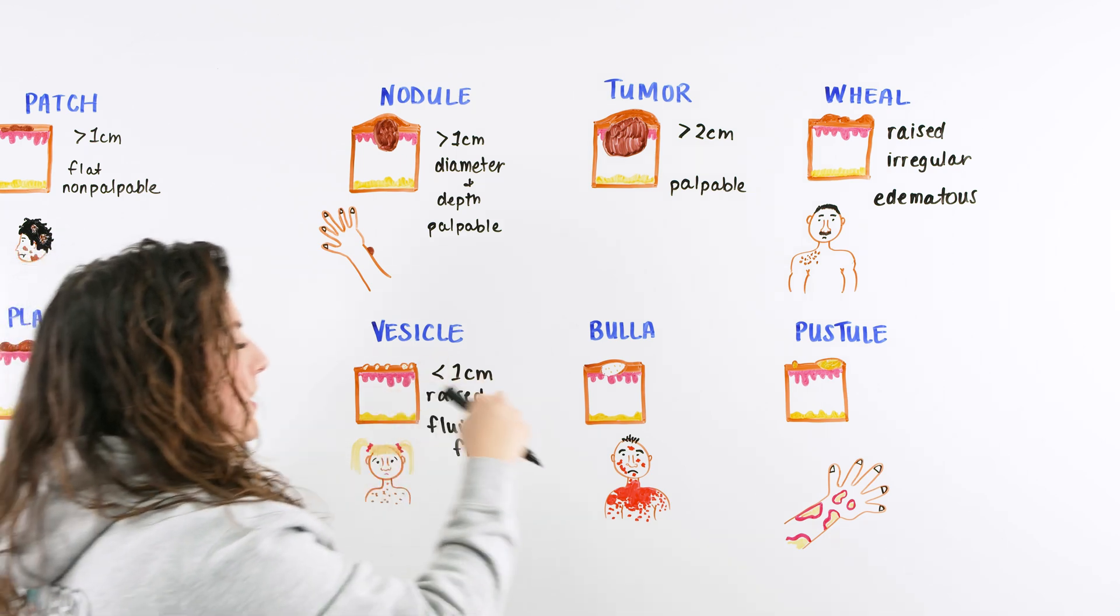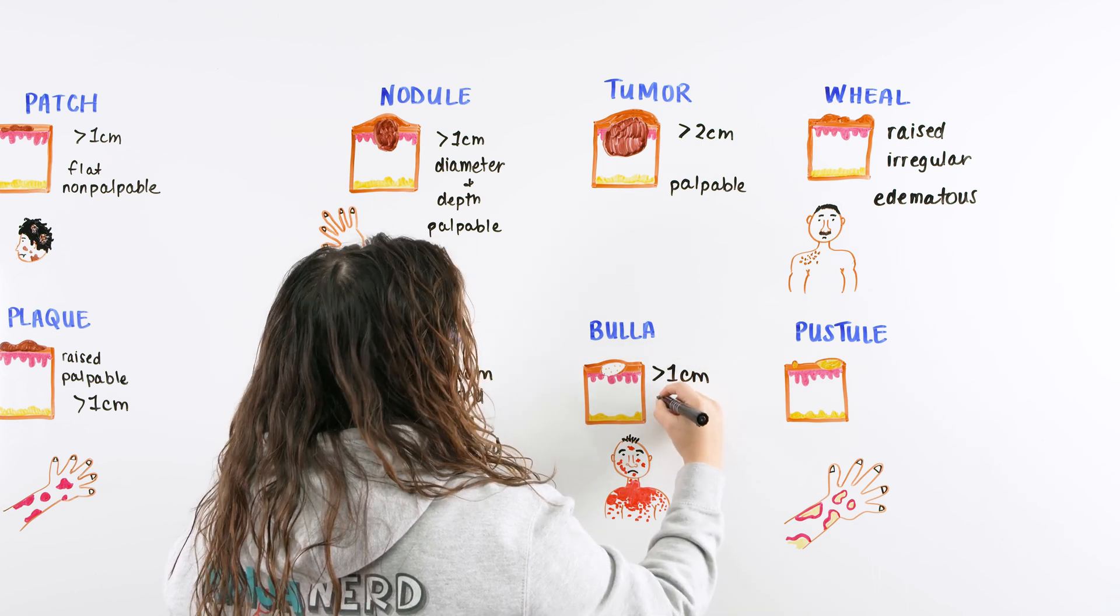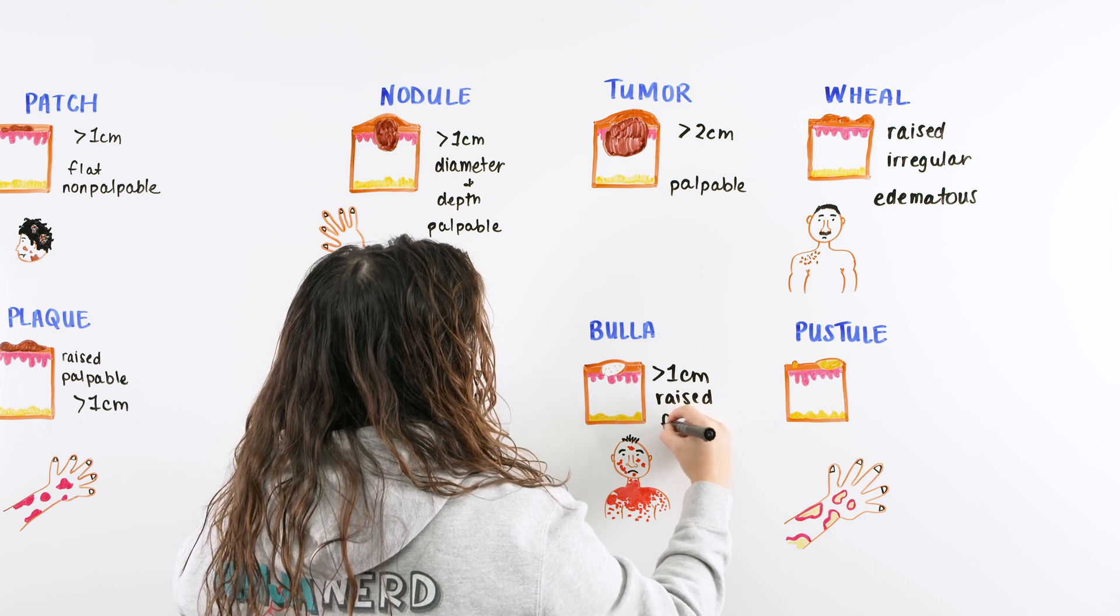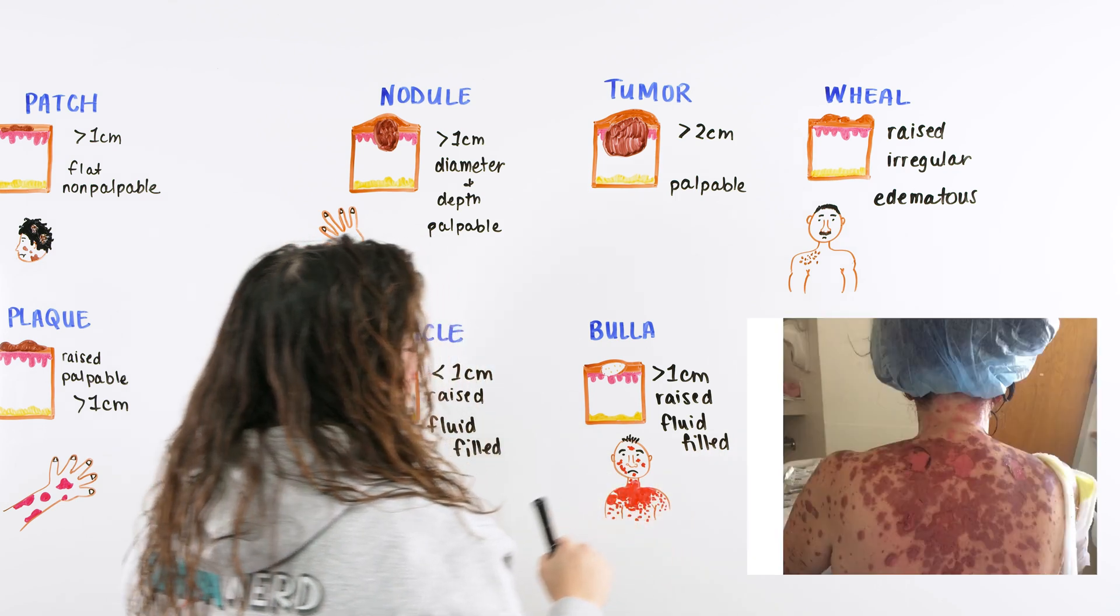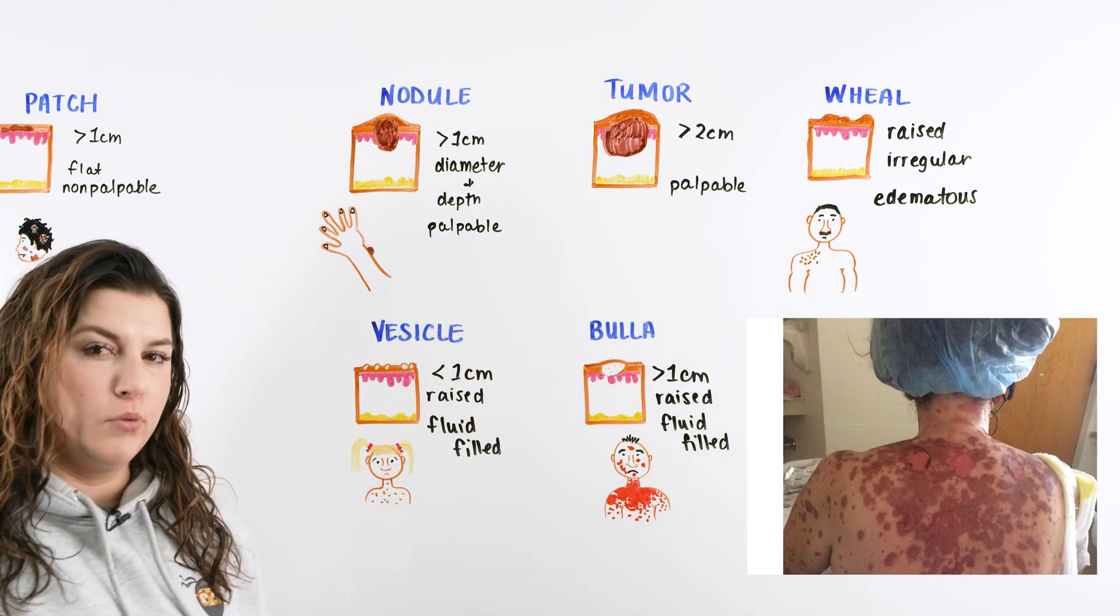Similar to before when we talked about our different macule and patch with our vesicle and then our bulla, our bulla is just a bigger fluid filled area. Greater than one centimeter, that's raised and fluid filled. That would be something like you would see blisters or you'd see Stevens-Johnson syndrome with all these lesions, these openings, like that fluid filled.